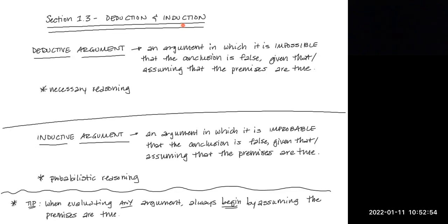If the conclusion is claimed to follow with strict certainty or necessity — necessary reasoning — then the argument is said to be deductive. But if it is claimed to follow only probably, or with probabilistic reasoning, then it is usually best interpreted as inductive.